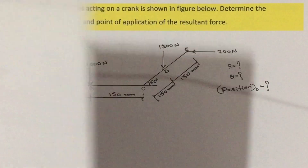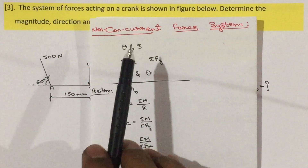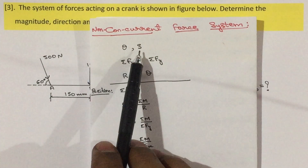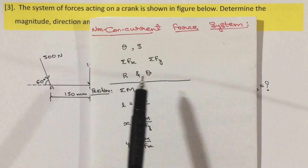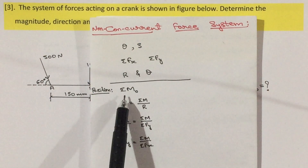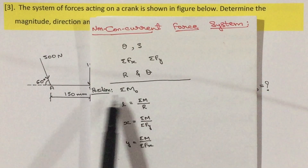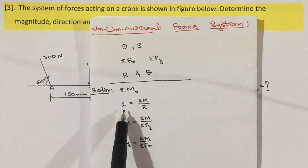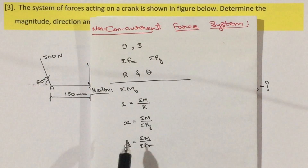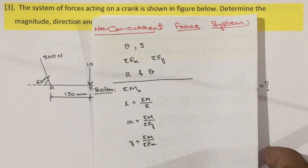Now we will follow the same regular procedure for a non-concurrent force system: first find the horizontal angle theta and split up the inclined forces, then calculate sigma Fx and sigma Fy, then find R and theta. To find the position, calculate the sum of the moment with respect to the required point O. Then perpendicular distance L = sigma M / R, X = sigma M / sigma Fy, and Y = sigma M / sigma Fx.